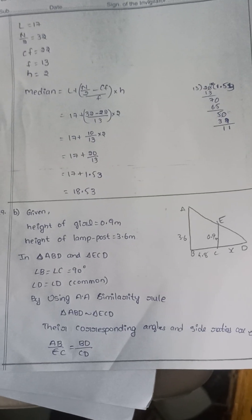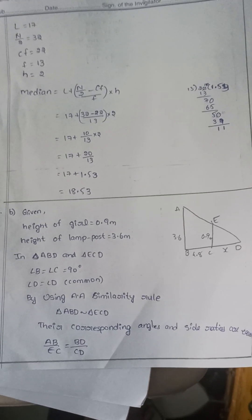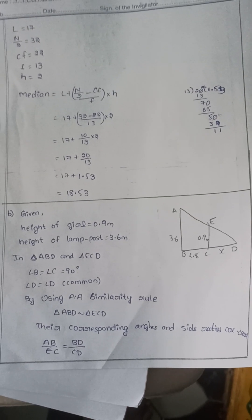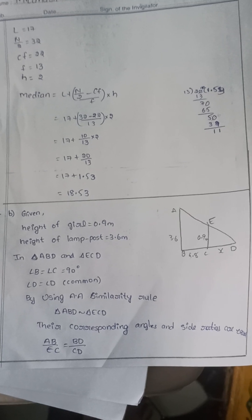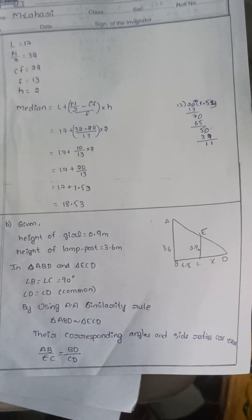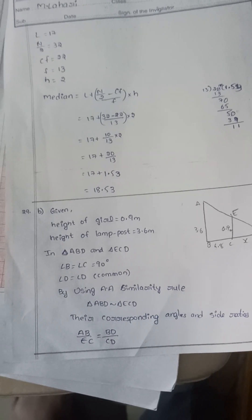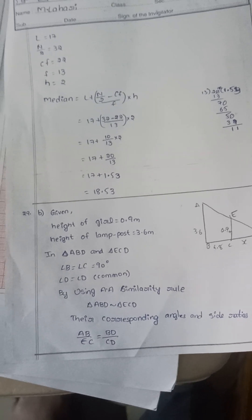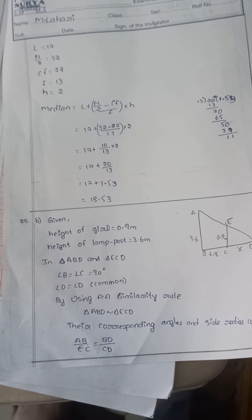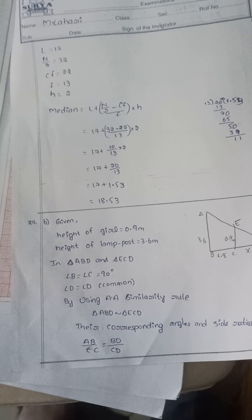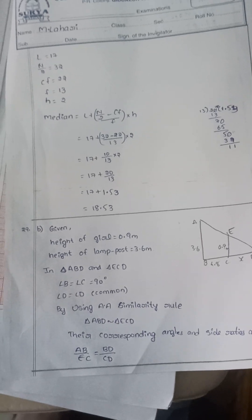Question 29b: a girl is moving from the top of a tower. Her speed is 1.2 meters per second. After 4 seconds, what is the length of the shadow? The length of the shadow is 1.6 meters.